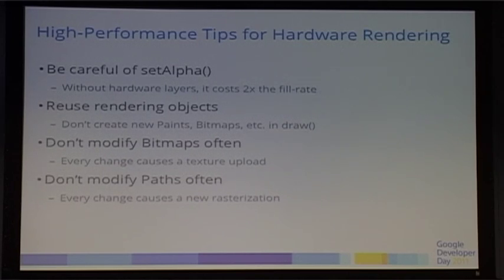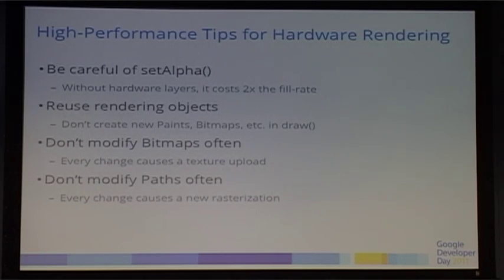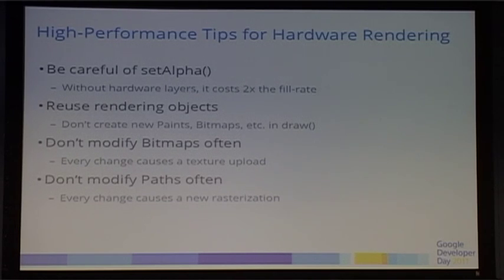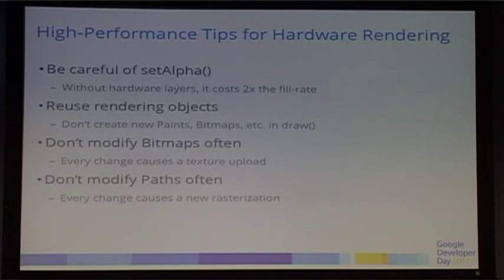Hardware rendering tips: be careful with setAlpha — without hardware layers it costs twice the fill rate. Use hardware layers instead. Reuse rendering objects where you can — construct them at the top and cache them. Don't modify bitmaps or paths when you don't need to. If you stick with these methods, we can use display lists and layers to optimize your application and keep it running at very high performance. If you go changing textures and cached paths, we have to invalidate and redraw.